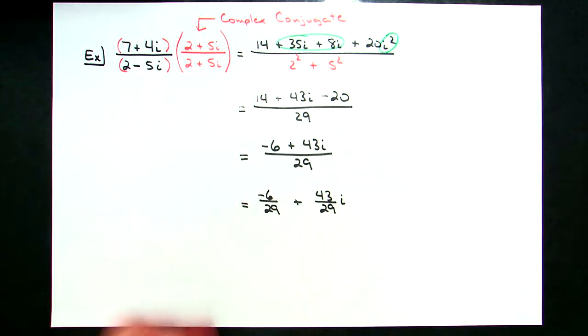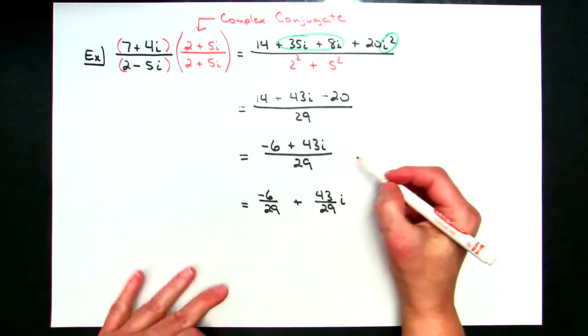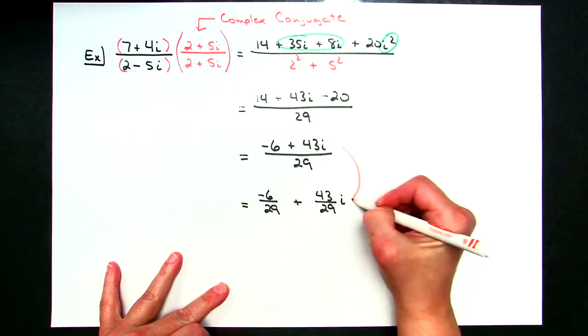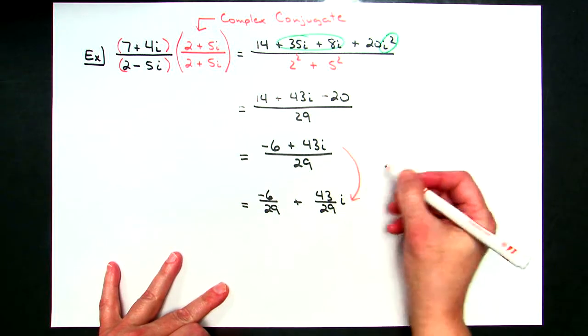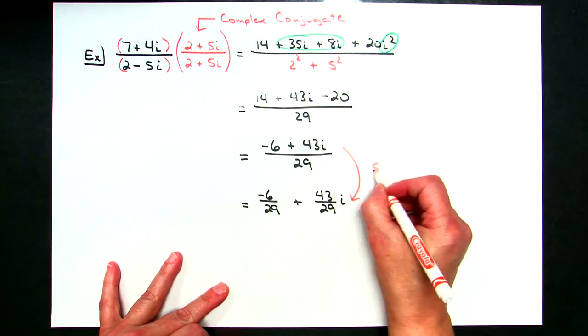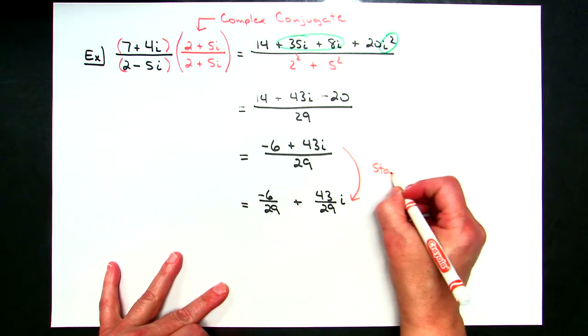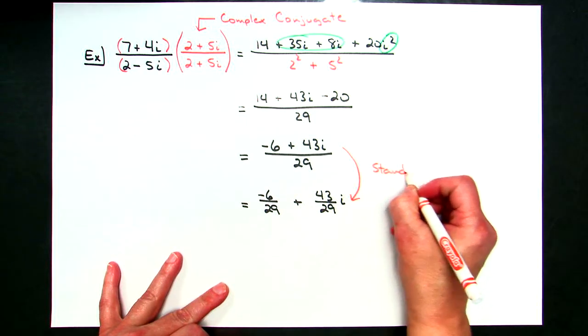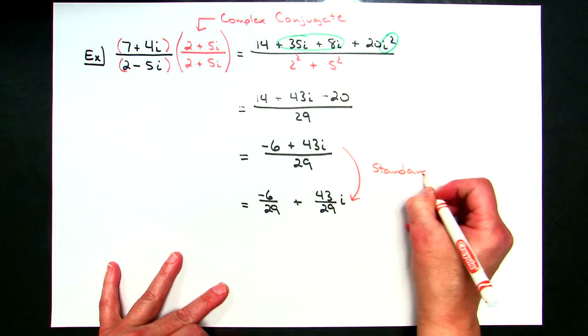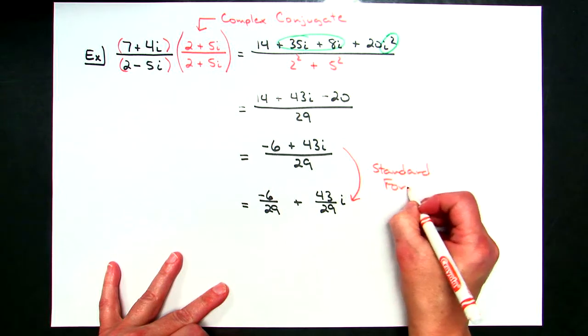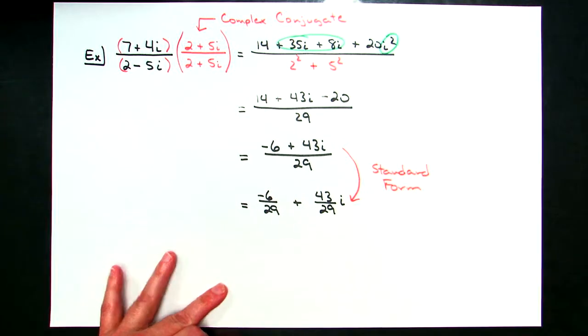Technically there's nothing wrong with leaving the answer as negative 6 plus 43i over 29, unless you're required to put it in standard form. If putting it in standard form, break it into two fractions: negative 6 over 29 plus 43 over 29 times i. The only difference between those two steps is just putting it in standard form, depending on what might be required.